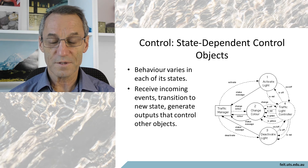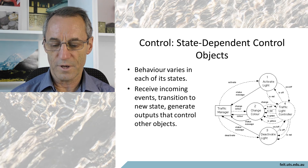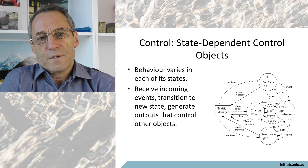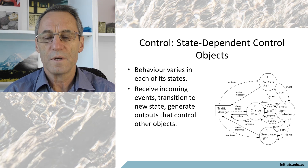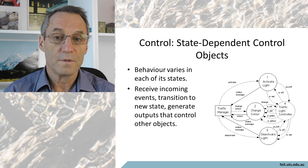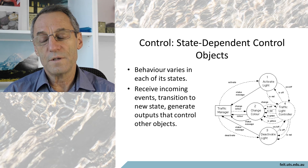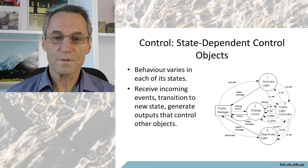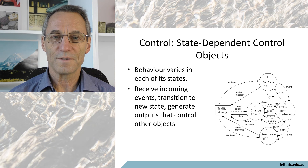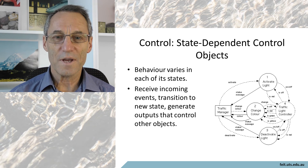State-dependent control objects have behavior that varies with each of their states - they receive incoming events and transition to a new state to generate outputs and control other objects. For example, in aircraft control systems there are at least three modes: takeoff, cruise, and landing. Commands generate different signals to the aircraft depending on the mode. Getting the mode wrong causes serious problems - you don't want takeoff engine behavior when landing, and this has caused crashes.